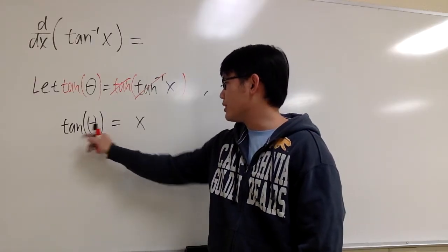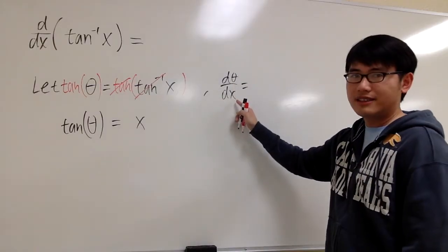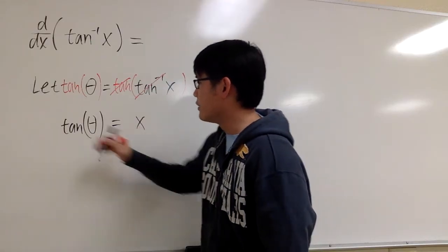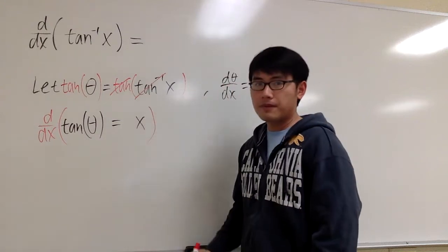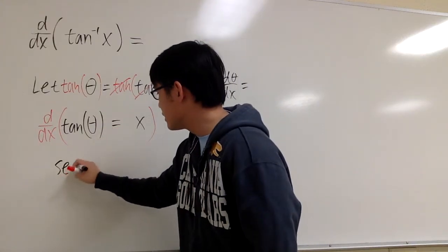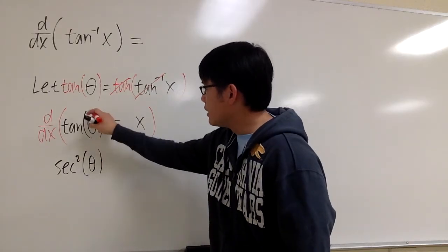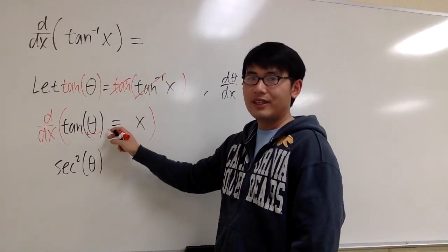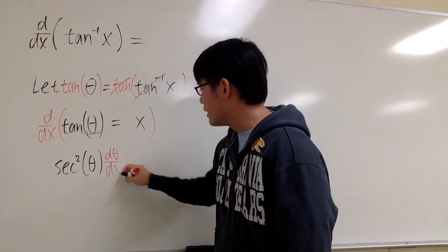In this situation, theta is a function of x, and our goal is to find dθ/dx. This equation is much better because now we take the derivative with respect to x. I know the derivative of the original tangent is secant squared, and the input is theta. However, you have to be careful. Because theta is a function of x, we have to use the chain rule, we have to multiply by dθ/dx.